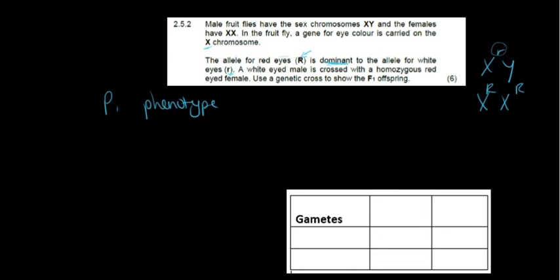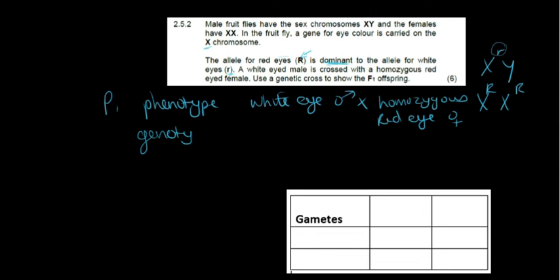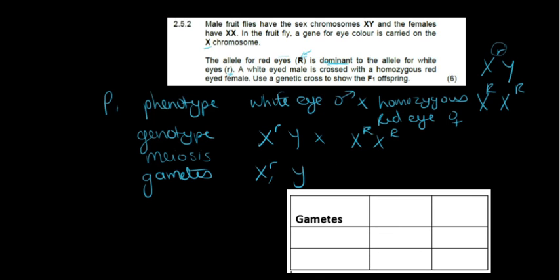So the phenotype: white-eyed male crossed with homozygous red-eyed female. The genotype, we just wrote it down now. Meiosis, which will produce our gametes, and then fertilization can occur.